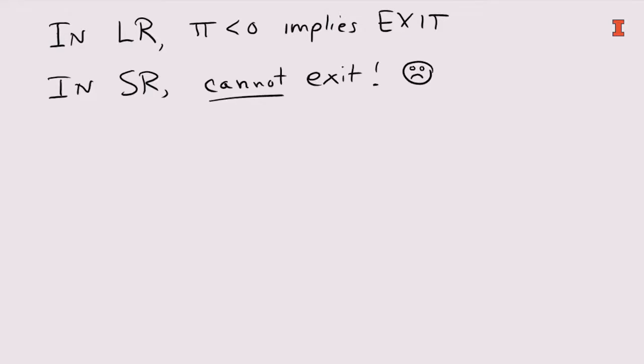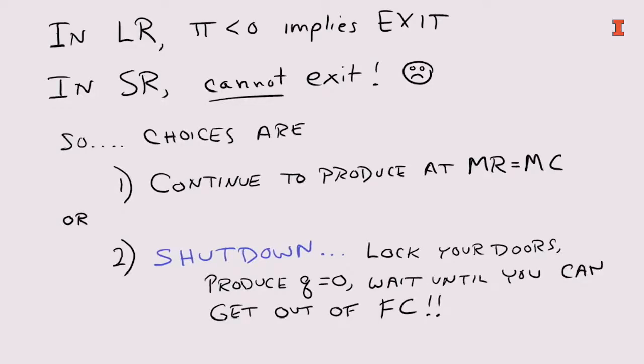In the short run, you cannot exit. You're stuck. You call your broker and say, find a buyer for this brick and mortar — I can't stay in this business, I've got to move to another line. The broker says, it might be a week or a month before I find a buyer. You might try to sublease your pizza joint in Campustown, but until you can actually move out, you're still stuck. So you have two choices: either continue to produce where marginal revenue equals marginal cost, or you can shut down.